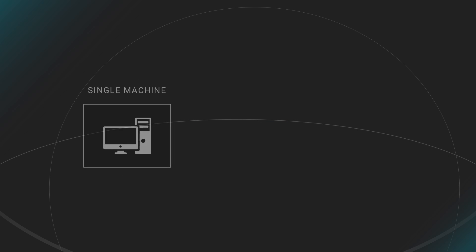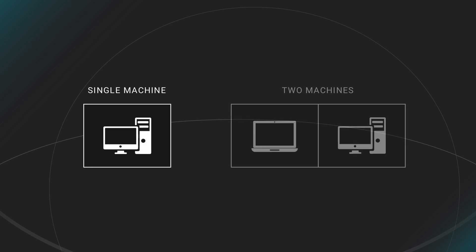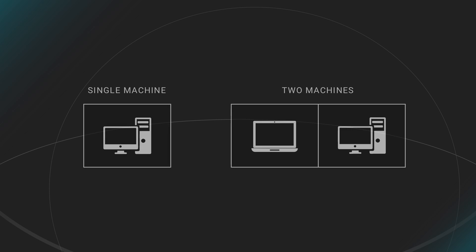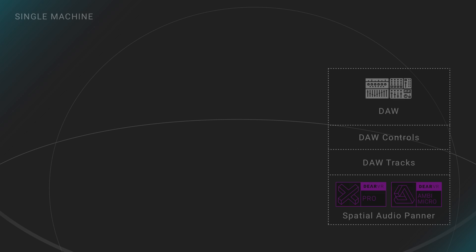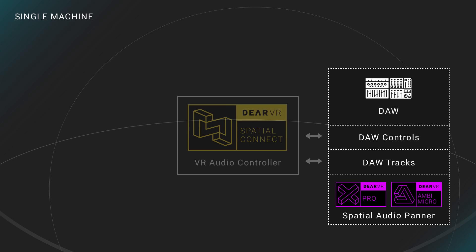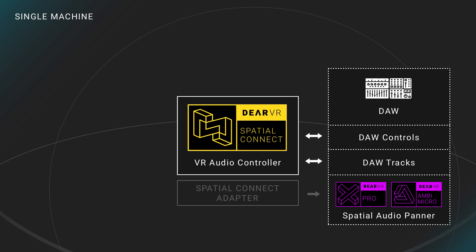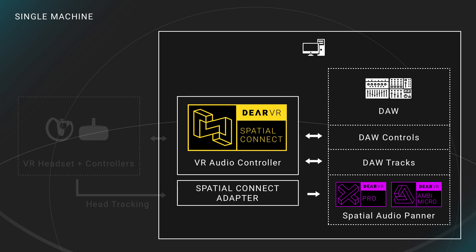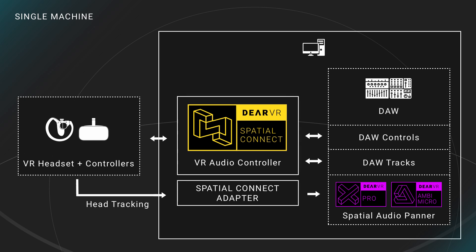There are two ways of setting up a workflow with Spatial Connect. The first one is to run your DAW, Spatial Connect, and Spatial Connect adapter all on one VR-ready Windows machine. This is the recommended setup if you don't want to run your audio workstation on a separate machine.